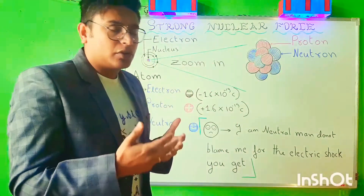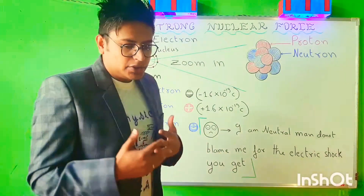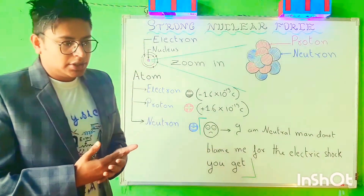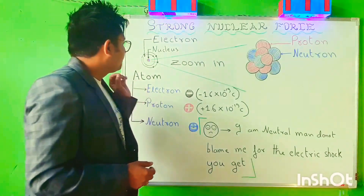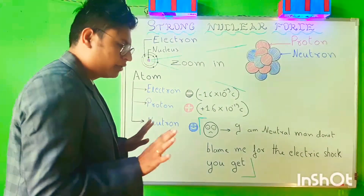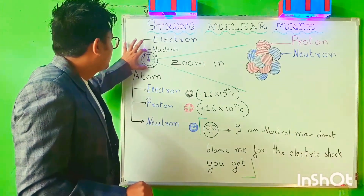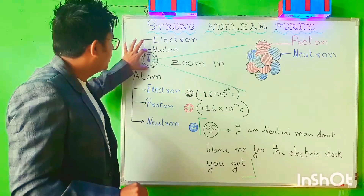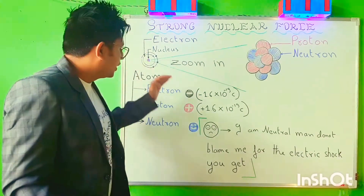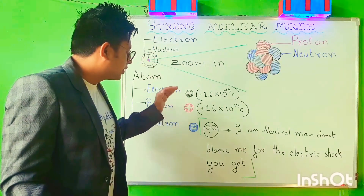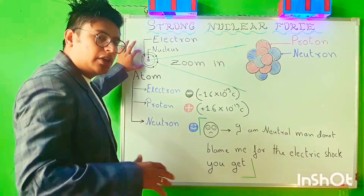This has been taught quite a lot and you might have come across this explanation during your class, maybe 8th, 9th, or even 10th grade. Since we have already discussed that an atom consists of one negatively charged particle, one positively charged particle, and a neutral particle, let us take this scenario again.